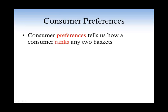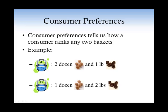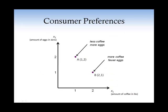Consumer preferences tells us how a consumer ranks any two baskets. Let's consider an example with two baskets. Basket A contains two dozen eggs and one pound of coffee, and basket B contains one dozen eggs and two pounds of coffee. We can also represent these baskets graphically. Let's call our consumer Mary.